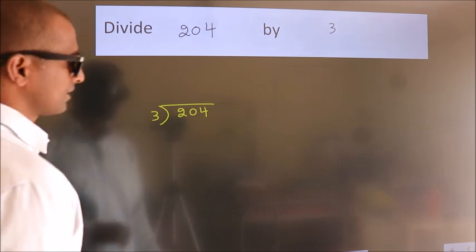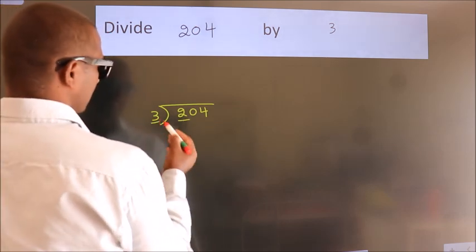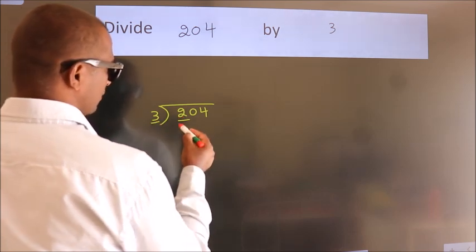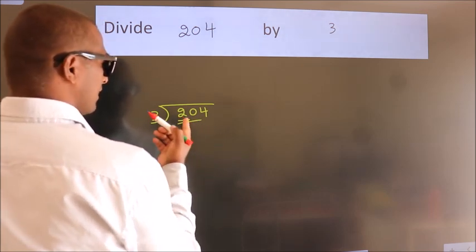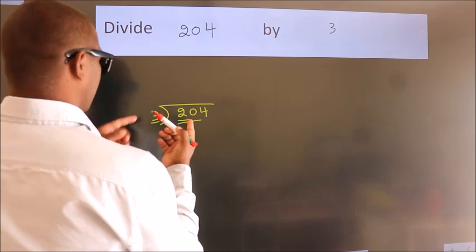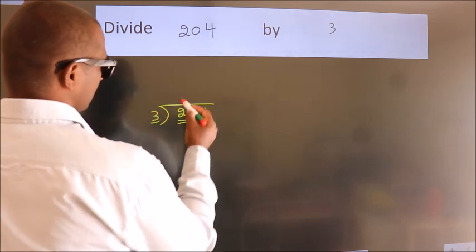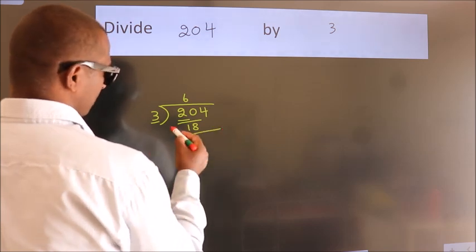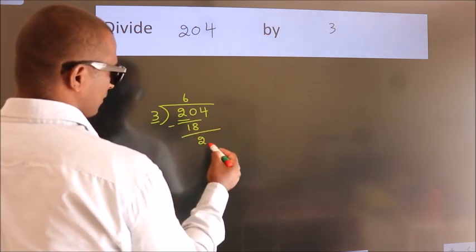Next, here we have 2, here 3. 2 is smaller than 3, so we should take two numbers: 20. A number close to 20 in the 3 table is 18—3 times 6. Now we subtract and get 2.